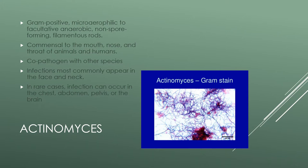Actinomyces are gram-positive micro-aerophilic to facultative anaerobic bacteria, and they do not form spores. They are commensals in the mouth, nose, and throat of animals and humans. They grow long filaments that give them a sort of dust bunny appearance, and they're often misidentified as a type of fungi because they appear filamentous under the microscope. They can cause abscesses, particularly after dental procedures, because they colonize in the aerodigestive tract.